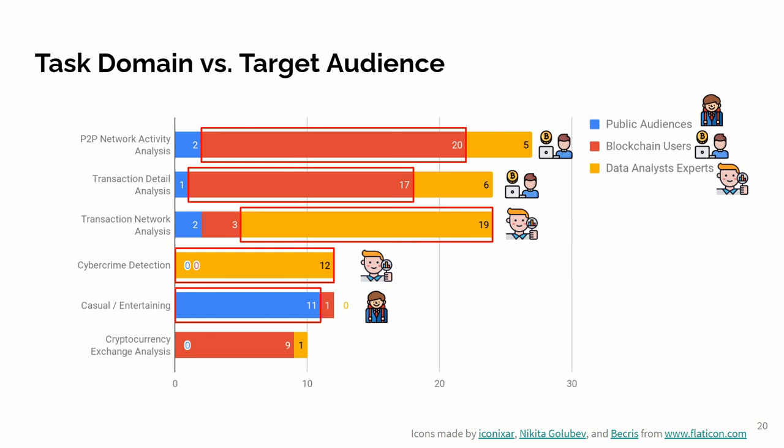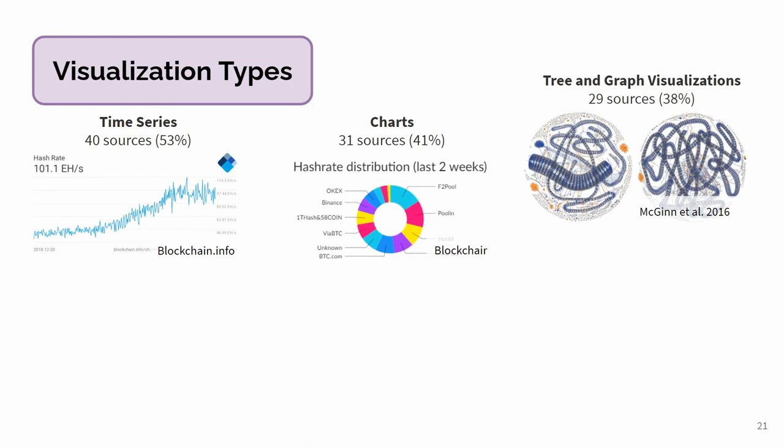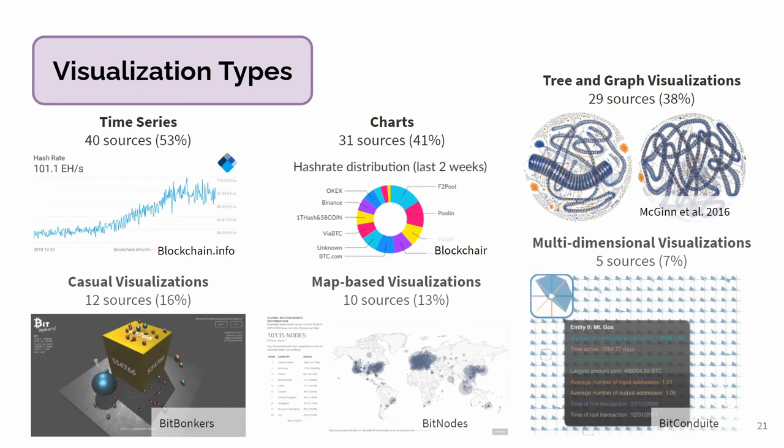Finally, looking at visualization types, time series were the main visualization type for blockchain data, followed by basic charts and tree and graph visualizations. This is not surprising because blockchain data is timestamped and transaction elements are connected as a network. Other visualization types include casual, map-based, and multi-dimensional visualization.